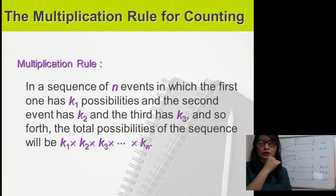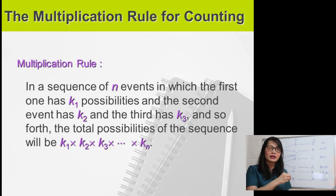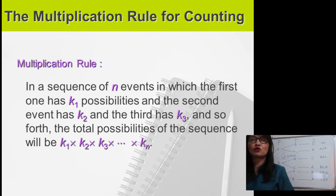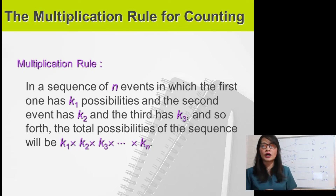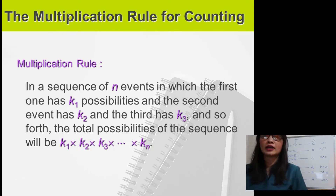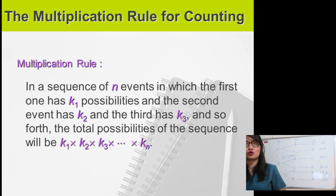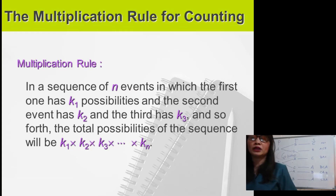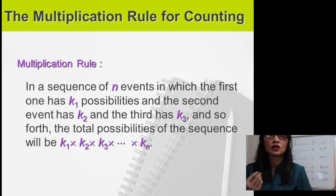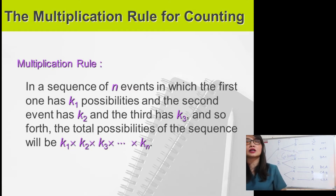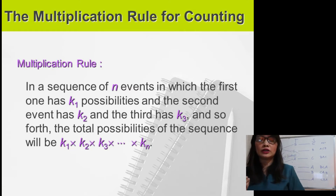Next, multiplication rule of counting. So instead of constructing a tree diagram, we can apply the multiplication rule of counting. In a sequence of n events, in which the first one has k₁ possibilities, the second has k₂, the third has k₃, and so on, the total possibilities will be k₁ × k₂ × k₃ × ... × kₙ.